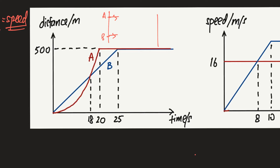Let's describe the motion for A and B. For A, you can see that it curves upward — the gradient is increasing, getting steeper and steeper, so increasing gradient means increasing speed, meaning A is accelerating. From time equals 20 seconds, cyclist A is not moving, meaning it has reached the finishing point. For B, this is a constant gradient — the steepness never changes — so constant gradient means constant speed. At time equals 25 seconds, B is also at rest, having reached its finishing point.